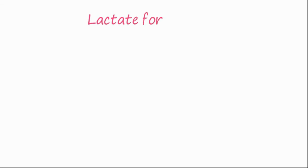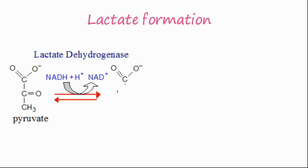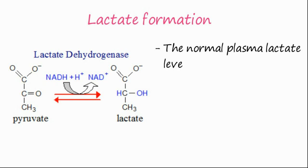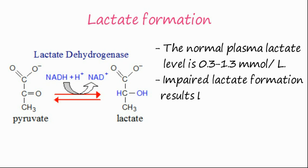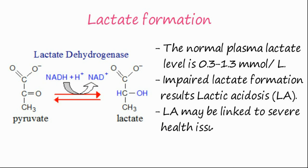The first is lactate formation. In the presence of lactate dehydrogenase, pyruvate is converted to lactate. The normal plasma lactate level is 0.3 to 1.3 millimoles per liter. Impaired lactate formation causes lactic acidosis, which may be linked to several health conditions.